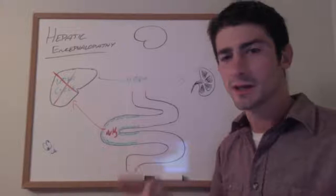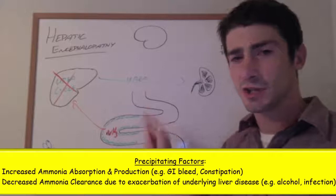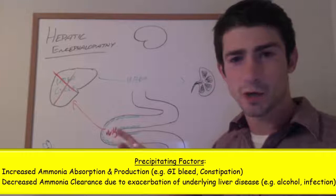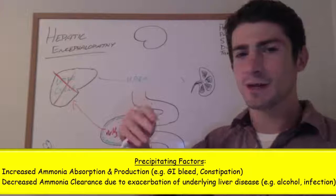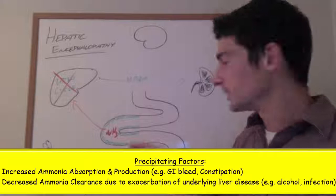That could be increased ammonia production, often caused by a GI bleed. The protein in our blood goes into the colon, is then broken down in the same way as the protein in our diet. That leads to increased ammonia levels that is too much for our liver to handle, so you get increased ammonia levels in circulation.